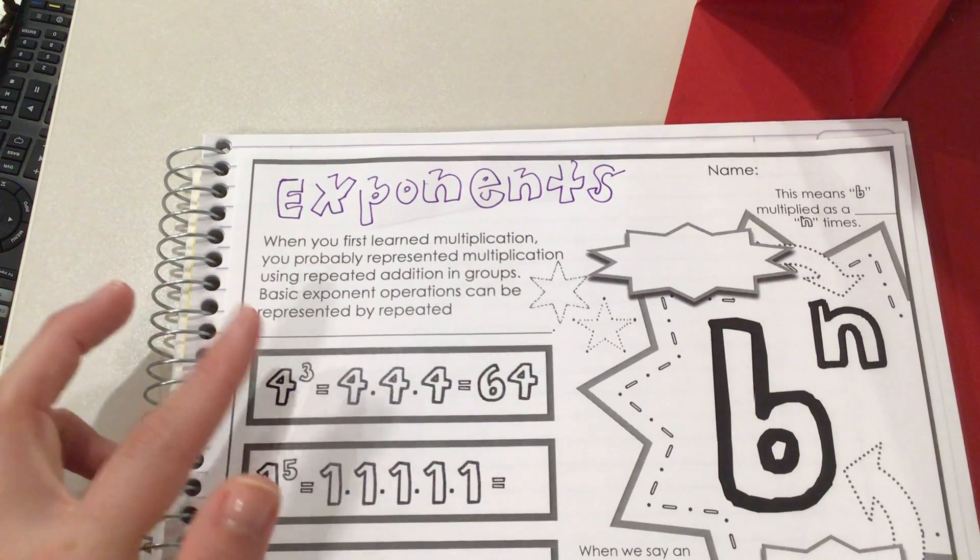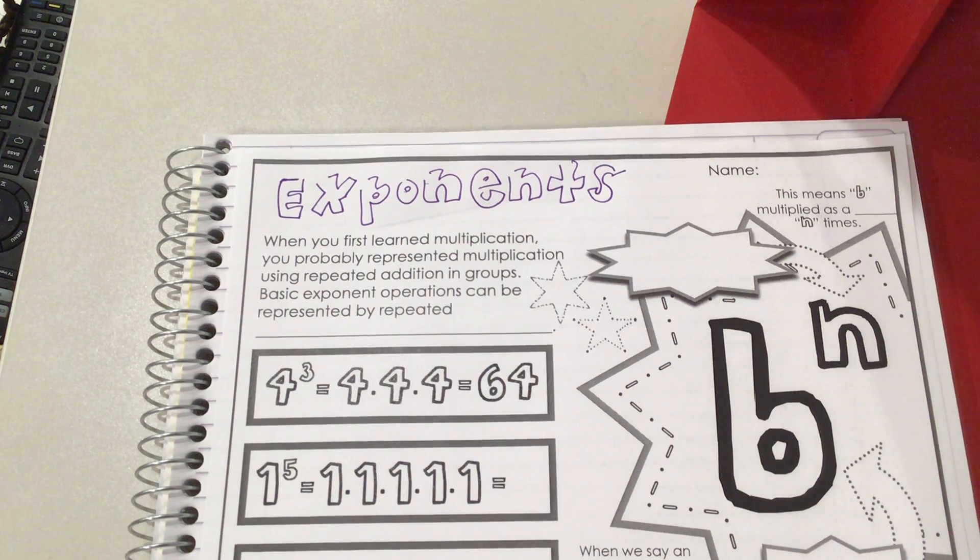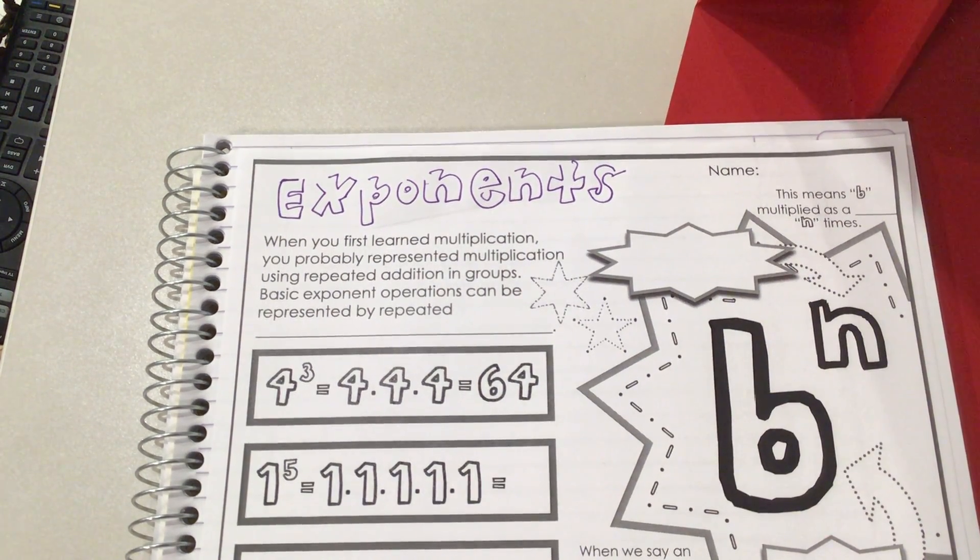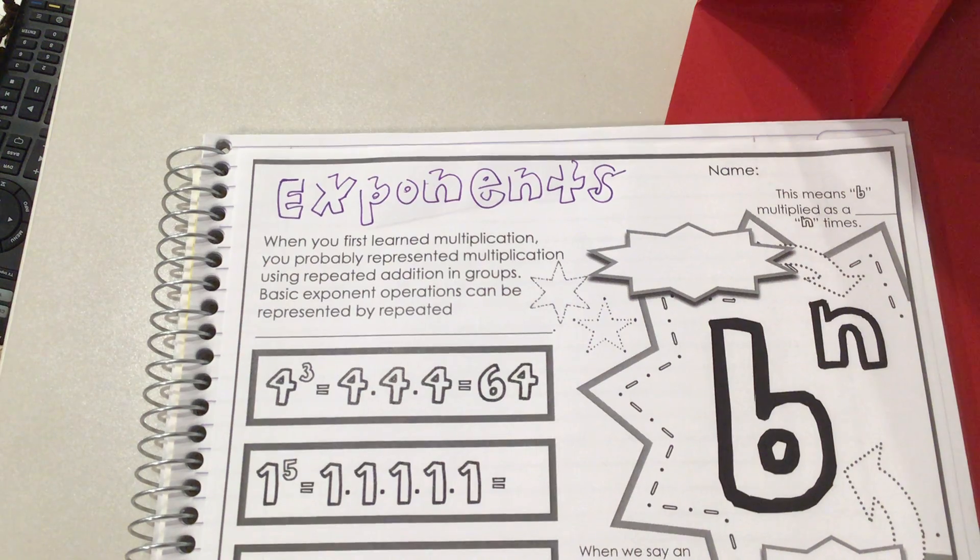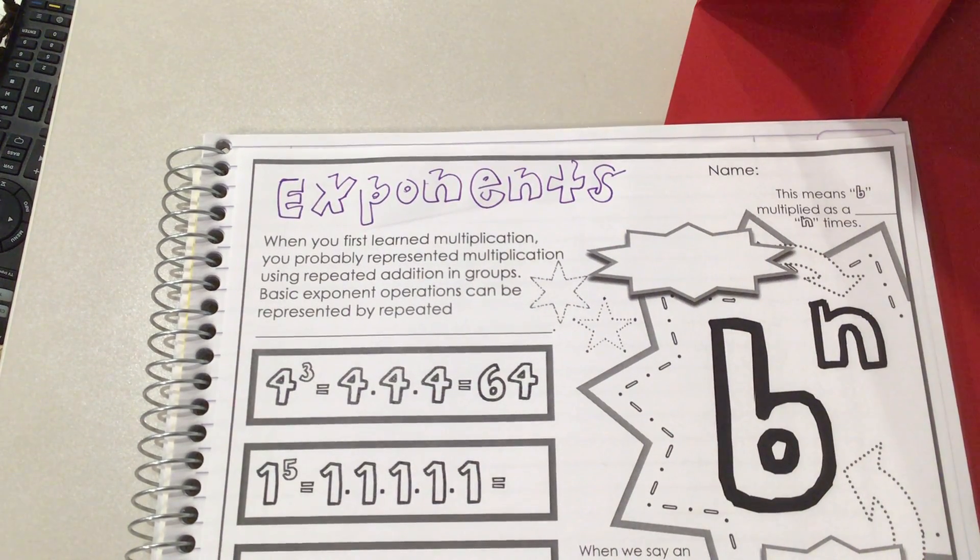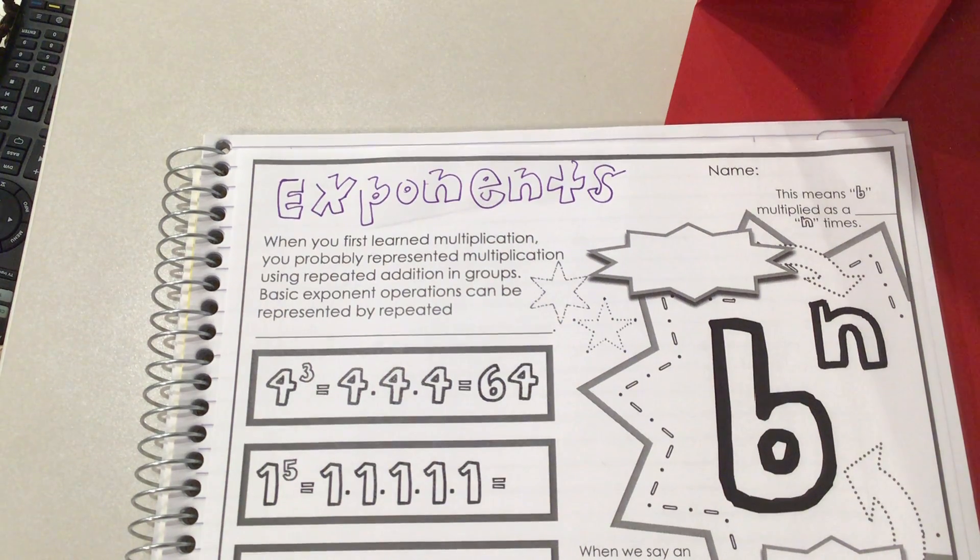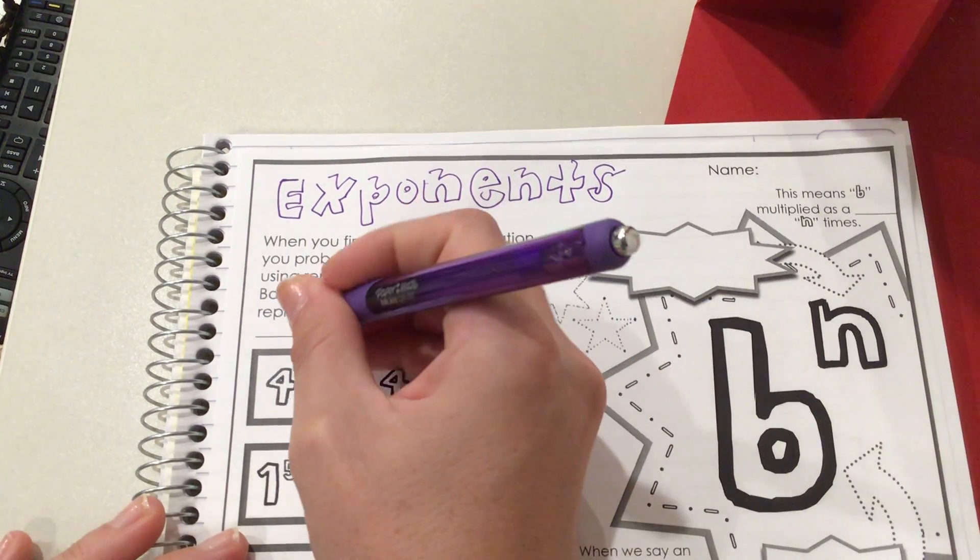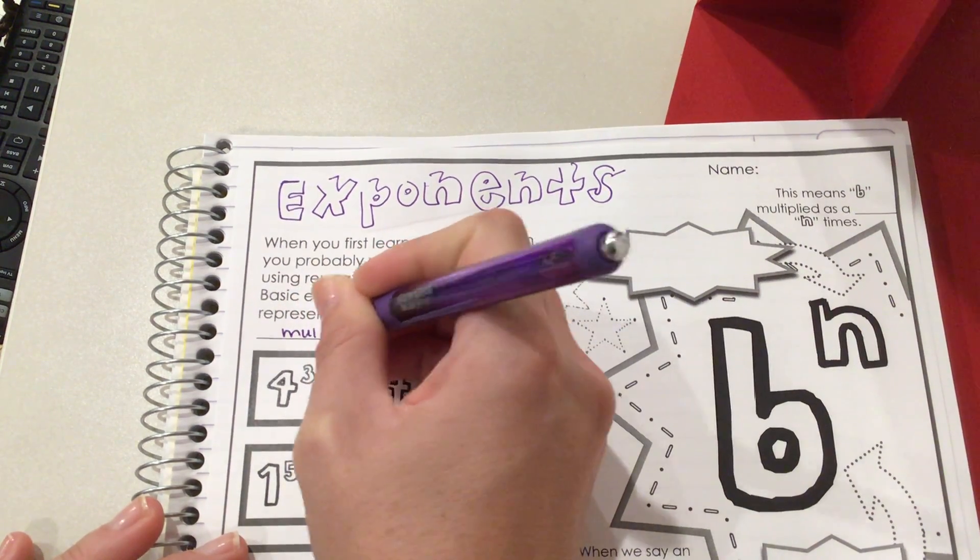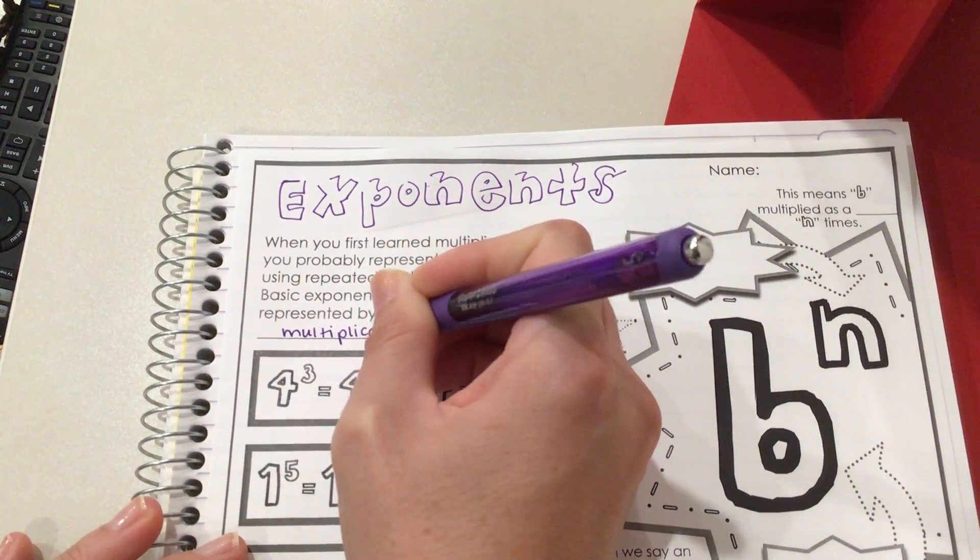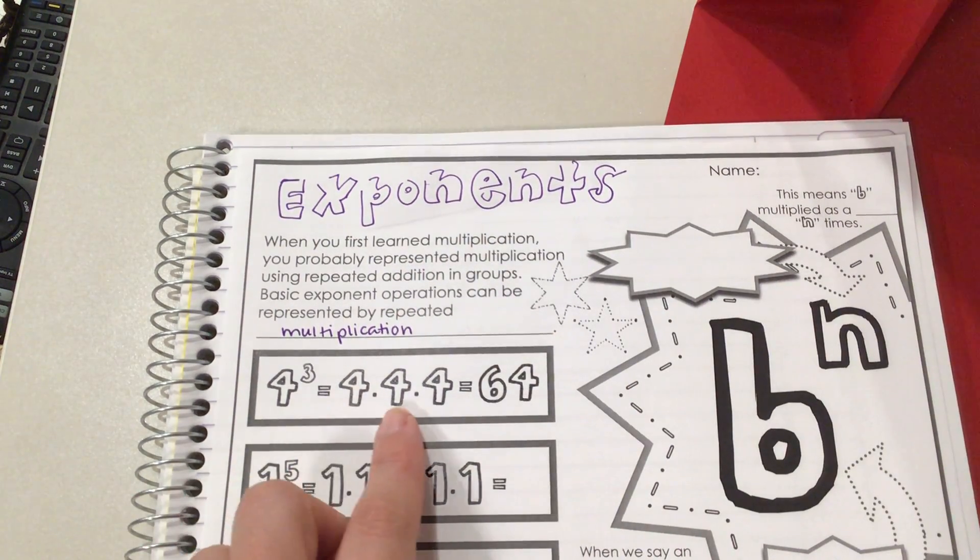We're going to start at the top. This gives us a definition of what an exponent is. When you learned multiplication, one strategy you can use is repeated addition, where you add numbers multiple times. So 2 times 4 would be the same as adding the number 2 four times. The same thing is true for exponents, except this time it's repeated multiplication. We're going to be multiplying the same number multiple times, always multiplying it by itself.